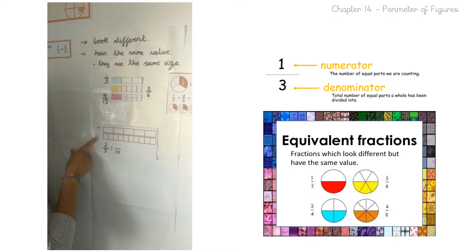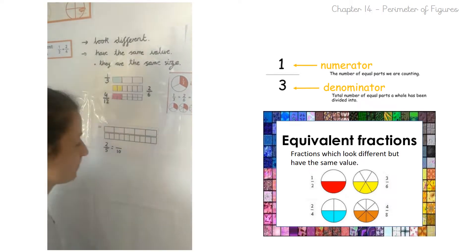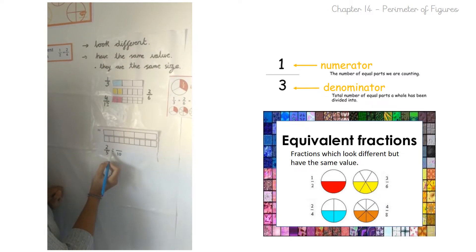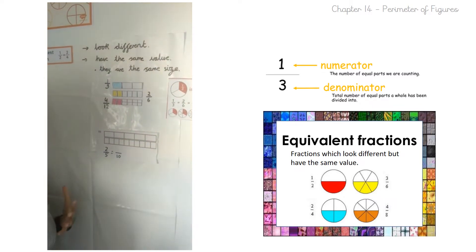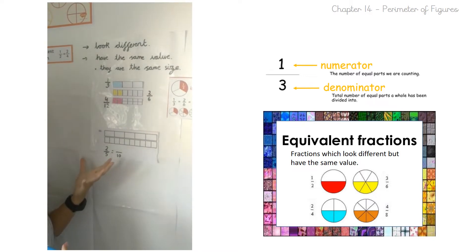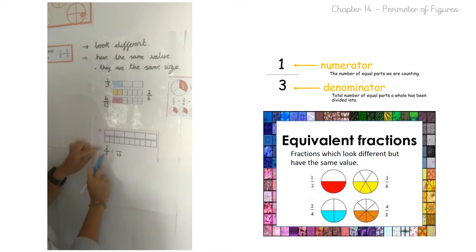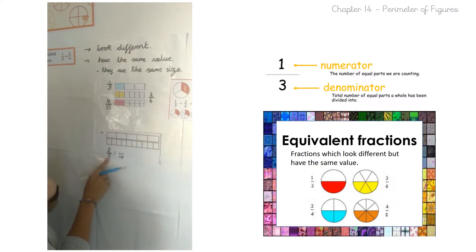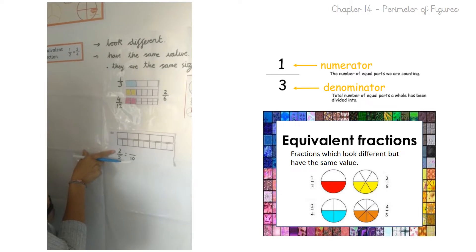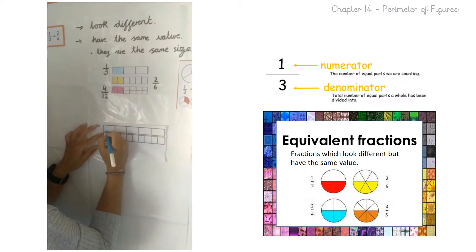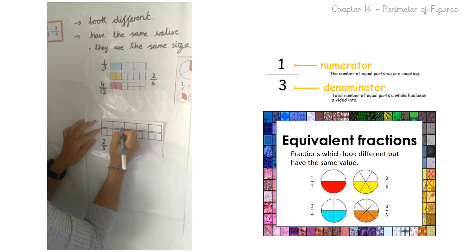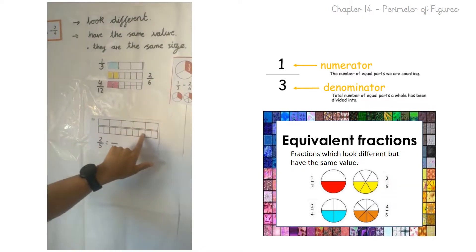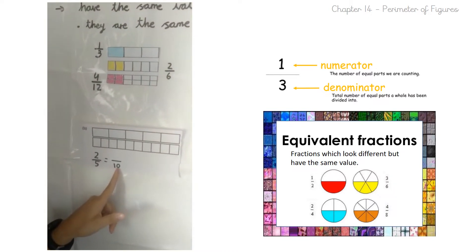We're going to go over what we learned yesterday once more. I have here two fractions: two fifths is equivalent to something tenths. So let's start by drawing what we know. Our first bar we know has been divided into five equal parts. How many parts do I need to count? Two. So I'm just going to shade two parts out of five. Now our second bar has been divided into how many equal parts? Ten.